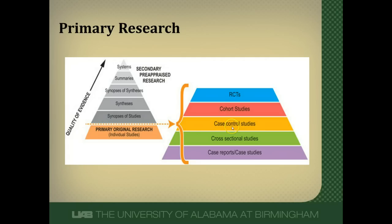Above that are case control studies. Case control studies are retrospective studies that start with disease and go backwards in time to try to find the exposures that the diseased and undiseased people were exposed to. The problem with them is being retrospective — anytime you go backwards in time, you're much more prone to make errors. Two particular errors they're prone to are selection bias and recall bias.